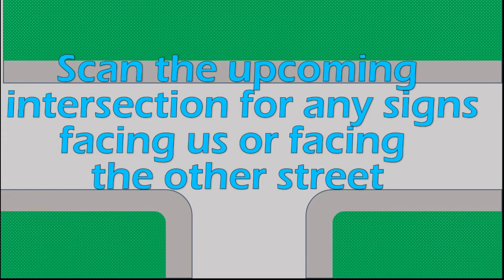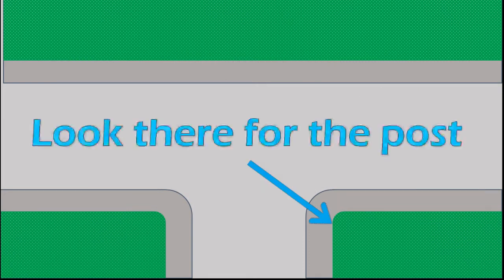One of the things that we have discussed is to scan for any signs that might be facing us or facing the other street. We are going to scan the far opposite side of the road for a post. Notice that I am saying post and not a sign because sometimes, depending on the angle of approach, you will not see the sign but you will see the post.